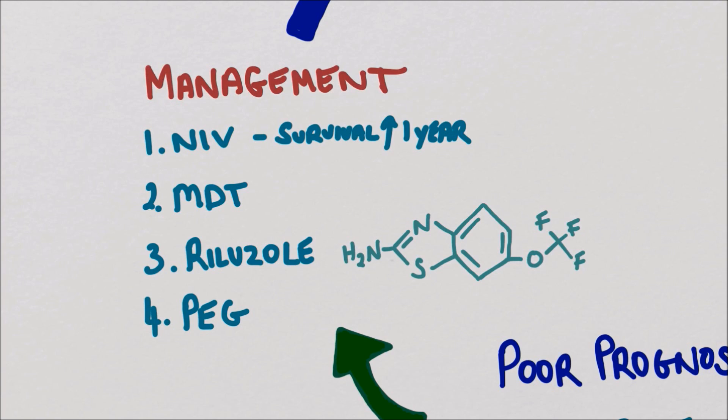A good MDT comprised of neurologists, general practitioners, nurses, physiotherapists, and other healthcare professionals can improve outcome by around six months. The drug Riluzole can also improve life expectancy by around six months by acting to reduce the amount of excitotoxic damage from levels of glutamate building up in the motor neurons.